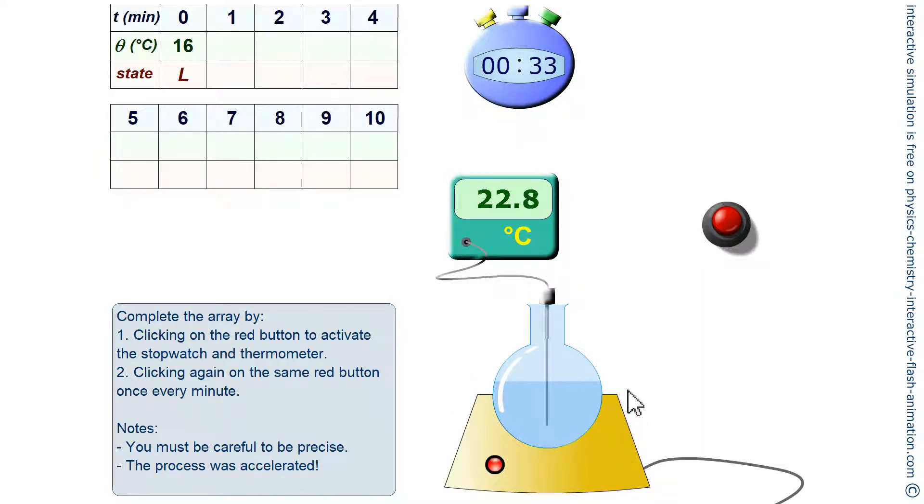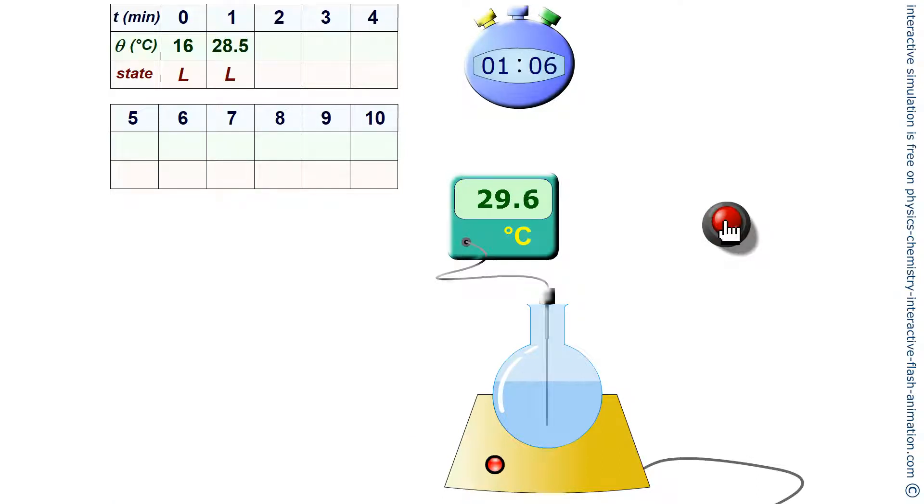We can observe what happens in the round bottom flask thanks to this cross-sectional view. You notice that the flask is open. The experiment is carried out at atmospheric pressure.